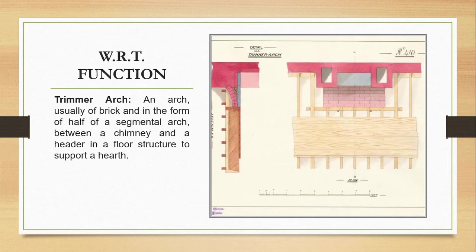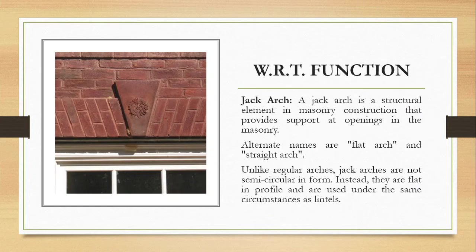The tremor arch is a specific type usually made of bricks — it is a kind of half-segmental arch. It is used between a chimney and a header in a floor structure to support a hearth, which is essentially a fireplace. The last functional type is the jack arch, also called a flat arch or straight arch. A jack arch is a structural element in masonry construction that provides support at openings. Unlike regular arches, jack arches are flat in profile and used under the same circumstances as lintels.